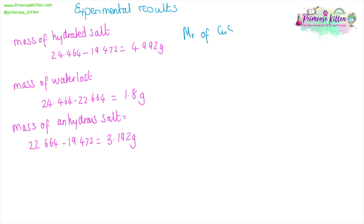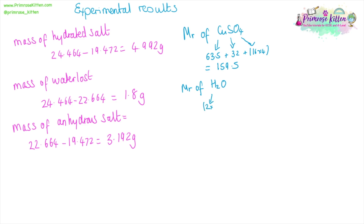Now we have all these numbers we can work out what number comes after the dot. We're going to do mole calculations, so we need to work out the Mr. Please use the Mr from the periodic table that the exam board has given you, as it may be to a different number of significant figures. The Mr of copper sulfate: one copper at 63.5, one sulfur at 32, and four oxygens at 16 each, giving an overall Mr of 159.5. The Mr of water is 18 — two hydrogens at 1 plus one oxygen at 16.